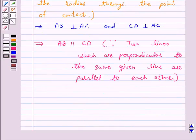Hence, we have proved that the tangents drawn at the ends of a diameter of a circle are parallel. I hope the solution is clear to you. Thank you.